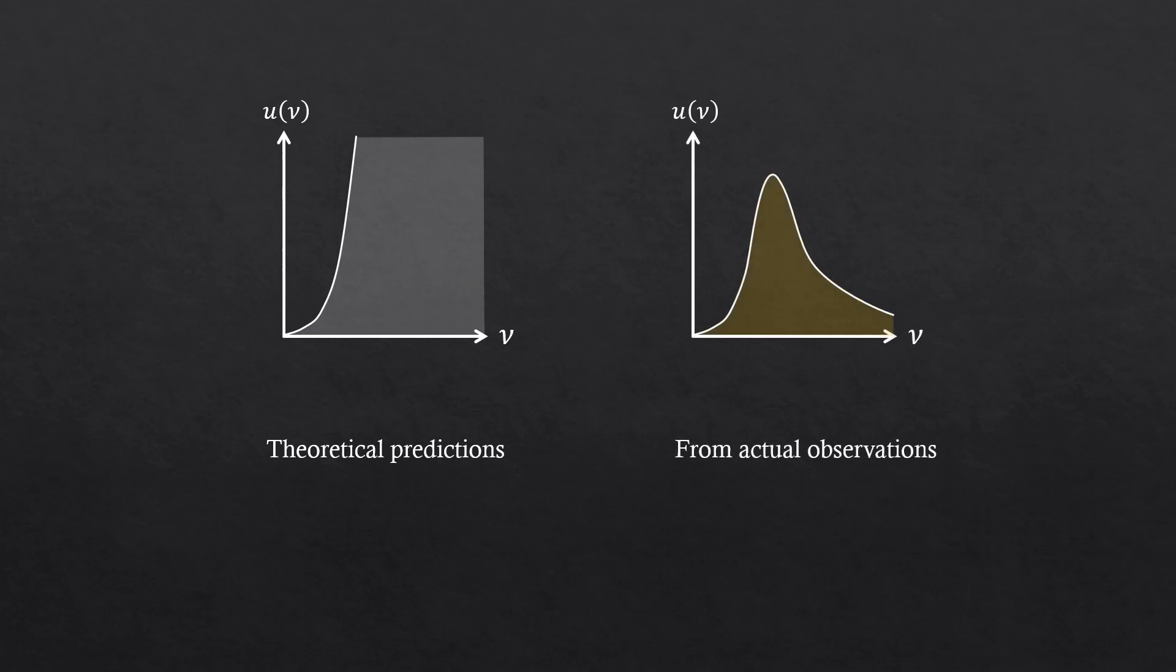From actual observations, they didn't see that happening. Obviously, otherwise we wouldn't even be here. But they did see that it at least partially matches with their predictions. The dotted line is the curve from the left plot. So it partially matches. At least that is something. But the observations didn't show the indefinite increase in energy density. Instead, it peaked at a certain point and went down again.